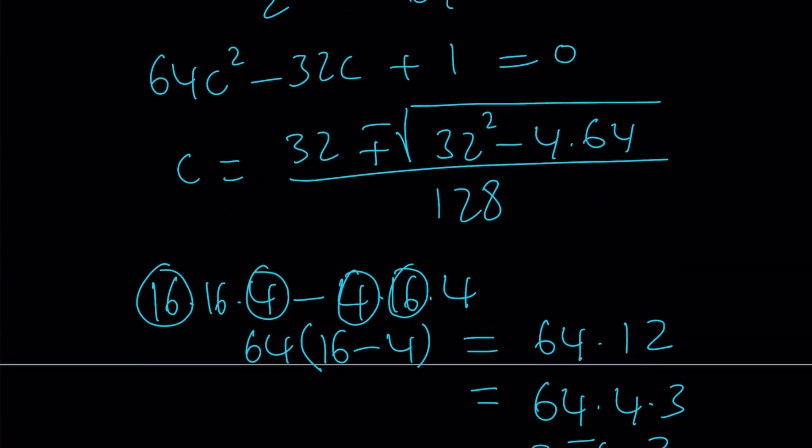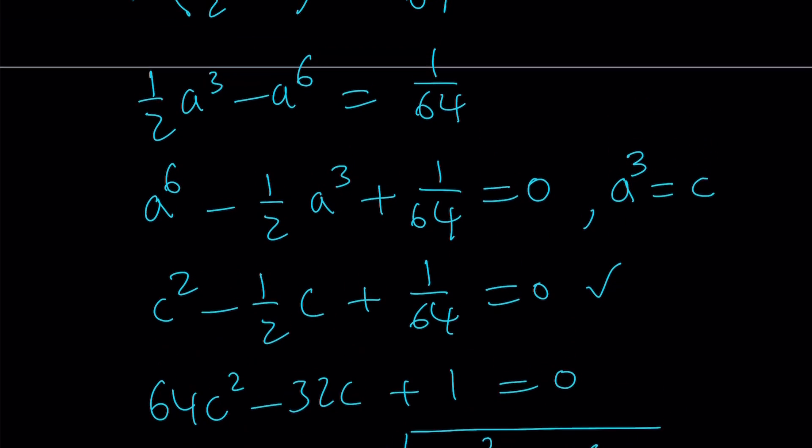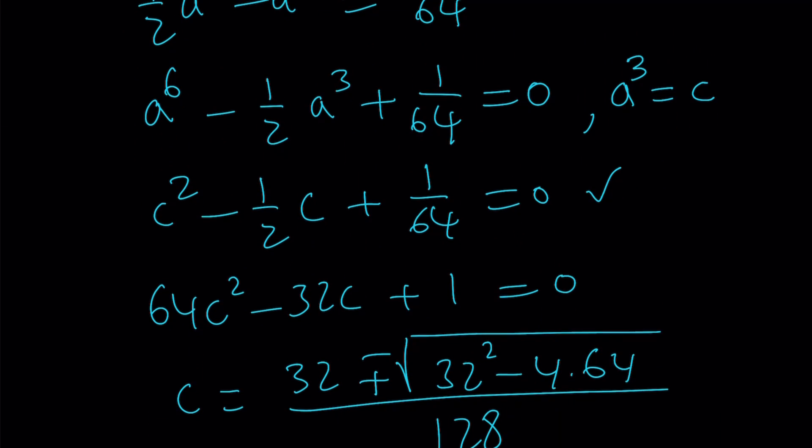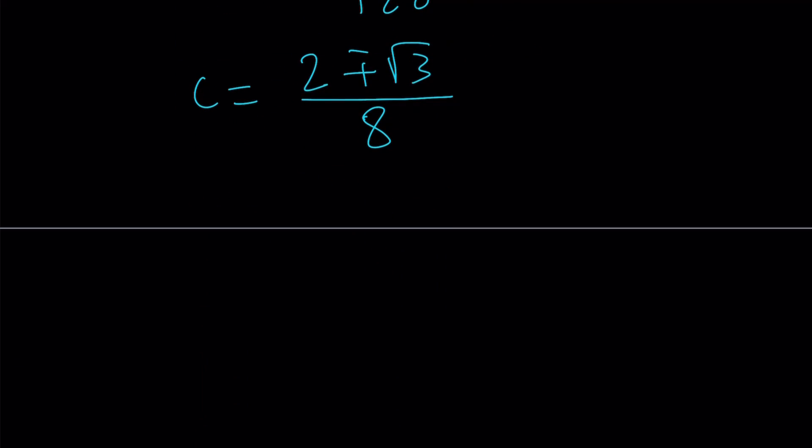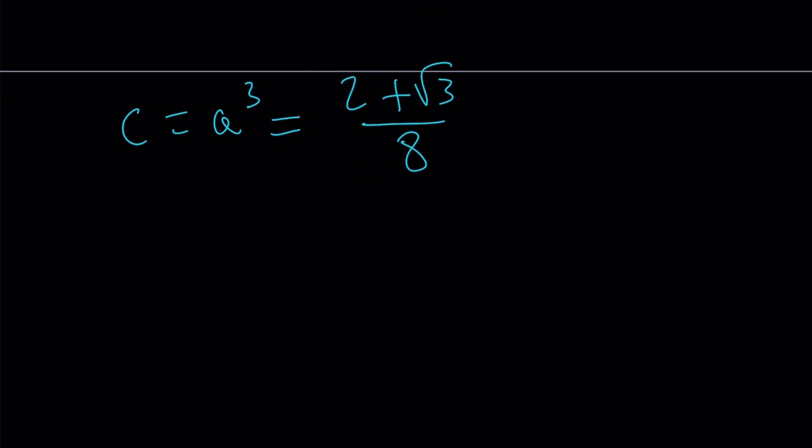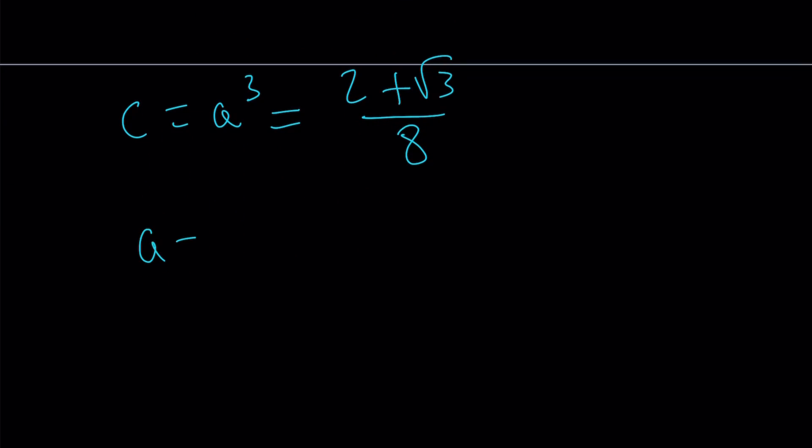But guess what? We don't need the C because we do need X, but for X, we do need A and B. For A, we can use this equation. A cubed is equal to C. All right, great. So which one are we going to use? Doesn't matter because A and B are interchangeable because X equals A plus B. You just pick one of them to be A. Let's just say, hey, C equals A cubed, and let A be the positive one, right? And B is going to be the other one. I mean, A cubed and B cubed, right? So A cubed is equal to this, which means A is equal to the cube root of 2 plus square root of 3 divided by 8.